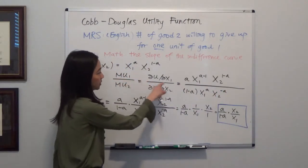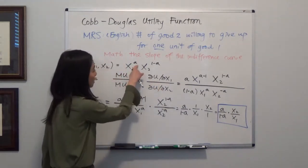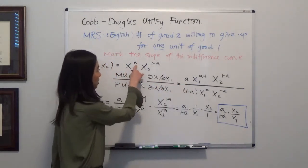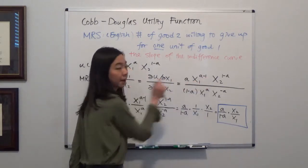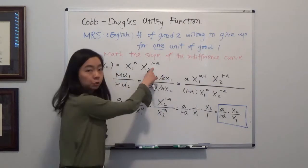So marginal utility of good one is the partial derivative of the utility function. We take down the a, and x1 to the a minus one's power times x2 to the one minus a. You see we treat that as a constant. We don't do anything to it.